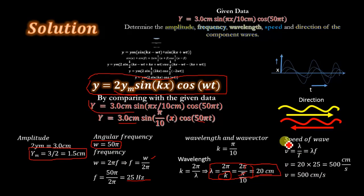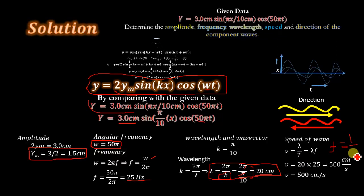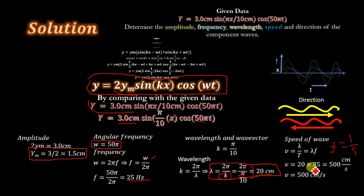Now we calculate the speed of the component waves. Using v = λ/T and knowing that f = 1/T, we get v = λf. With λ = 20 cm and f = 25 Hz, multiplying gives v = 500 cm per second. This is the speed of the component waves.